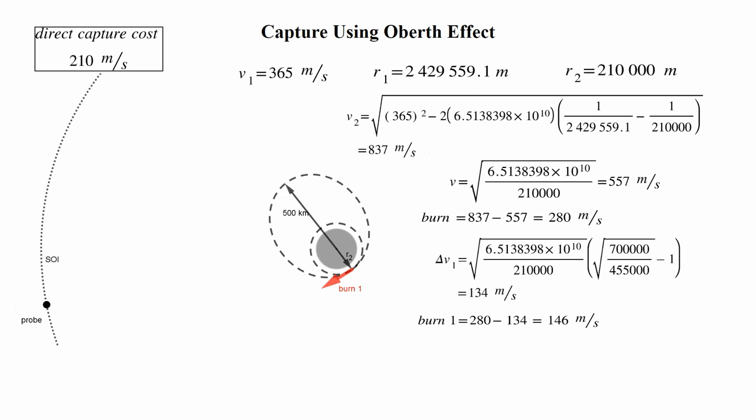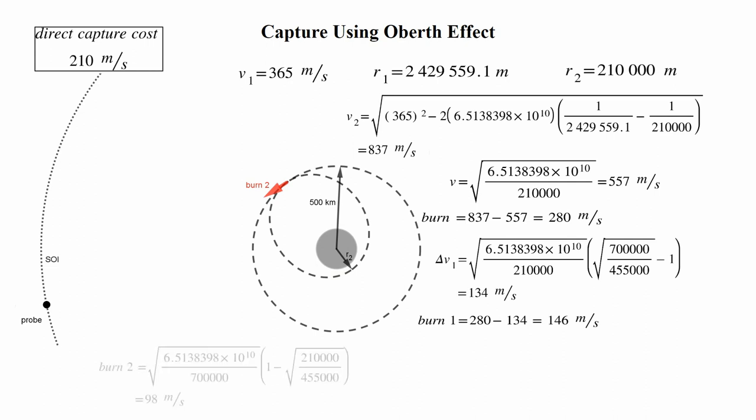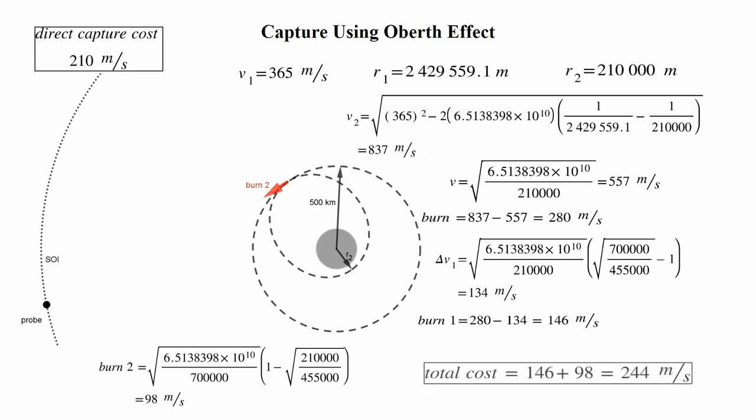But we're not done yet. Now we have to calculate the cost of the circularization burn at apoapsis. That's just the second vis-viva equation. Substituting in the numbers once again and pushing through a calculator gets that it needs to be 98 meters per second. Using this technique, we have two burns that sum to 244 meters per second, 34 meters per second more than just doing the direct capture. Kind of looks like using the Oberth effect is hogwash when it comes to getting captures.